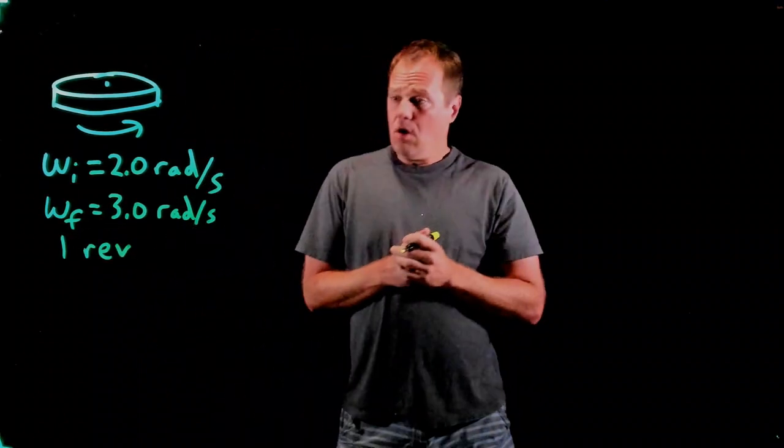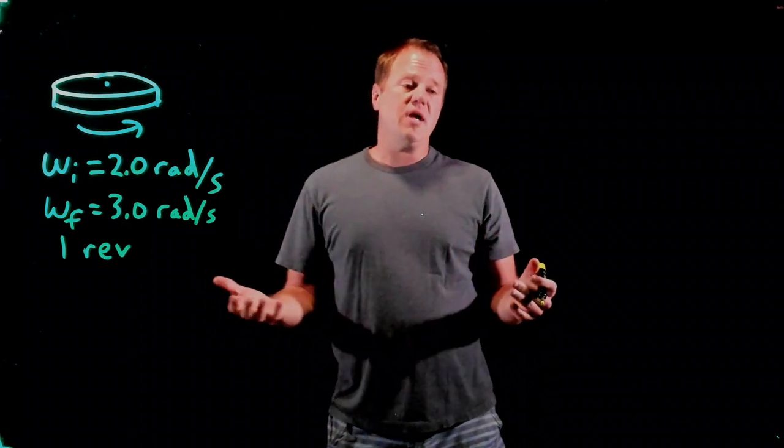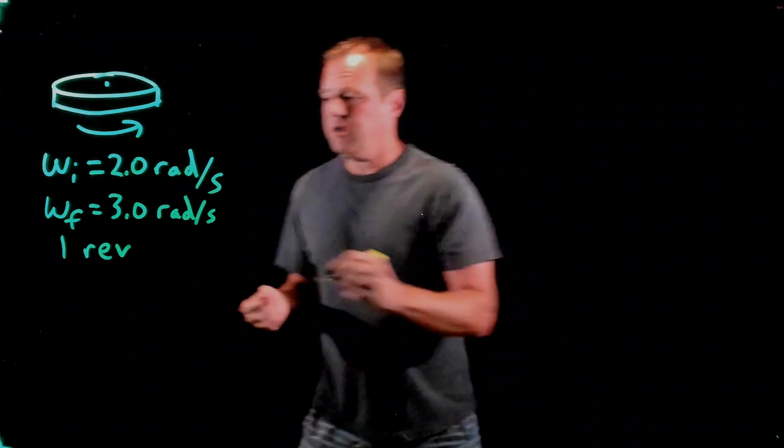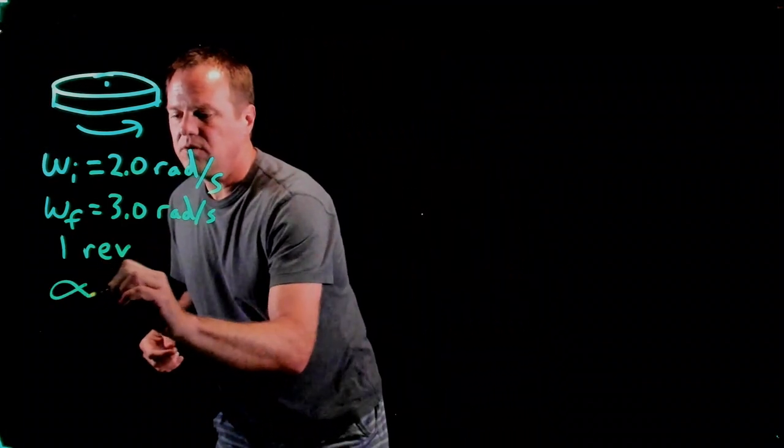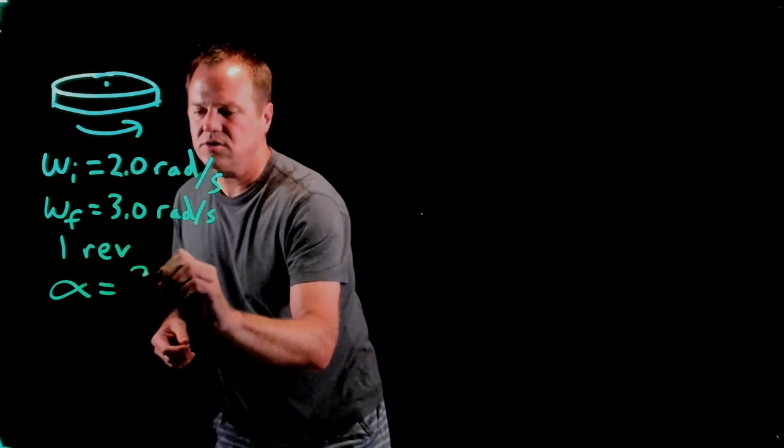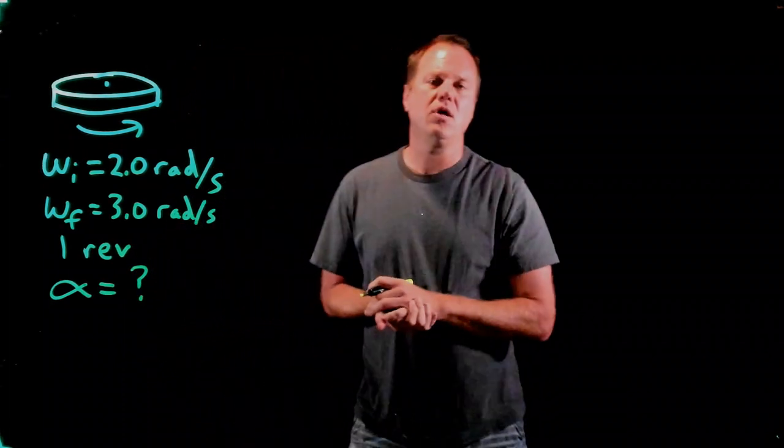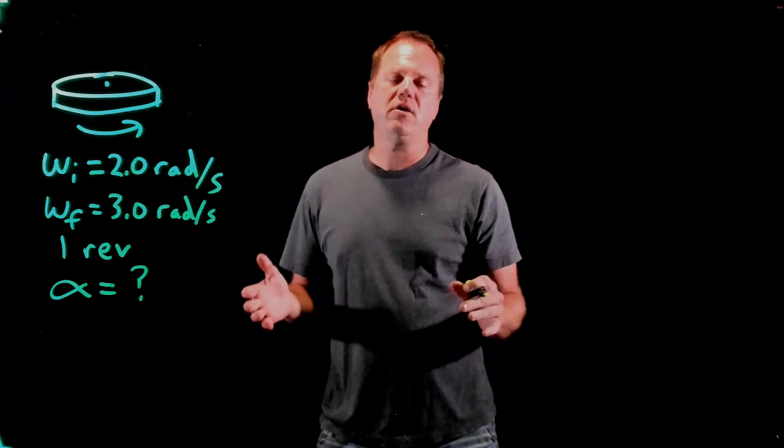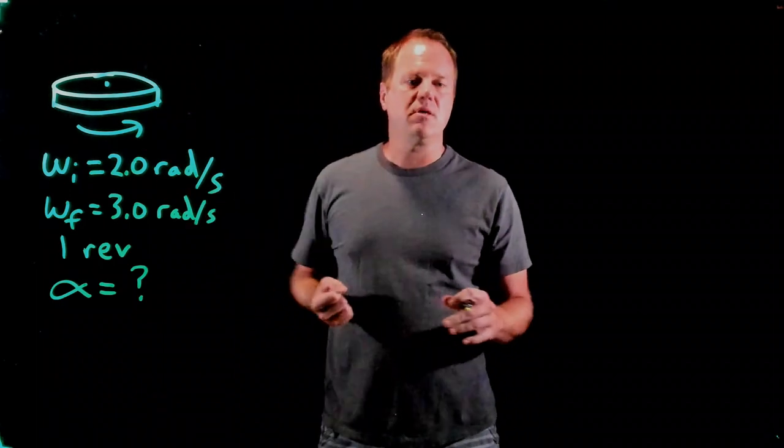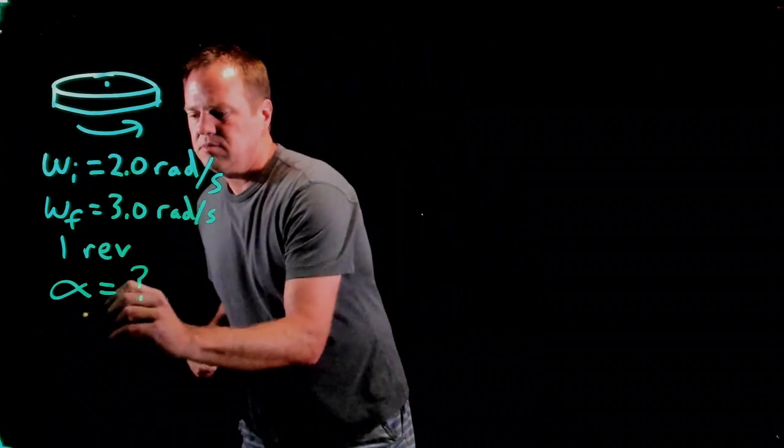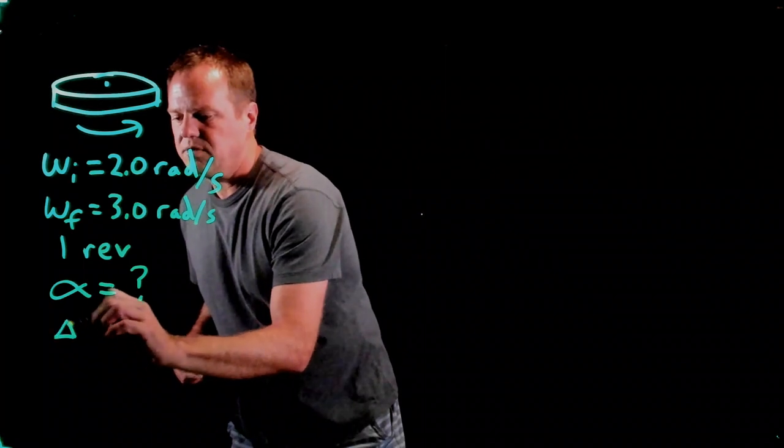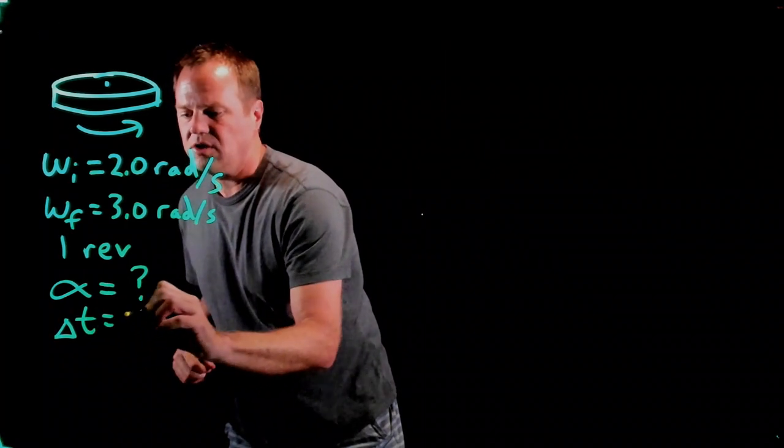And we are going to assume constant angular acceleration. We're going to calculate that. So angular acceleration, assumed constant, is unknown. And we're also going to calculate the time that it takes somebody to make this merry-go-round speed up. So the time interval Δt is also an unknown.